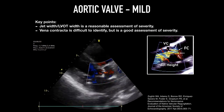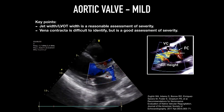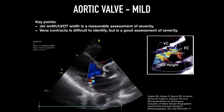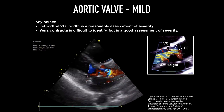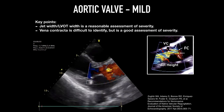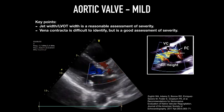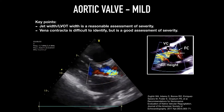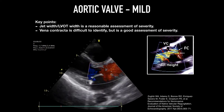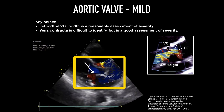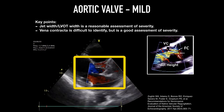A large vena contracta — more than 0.6 cm — means severe AR. An easier and also reasonable assessment is the jet width divided by the LVOT width: how much of the LVOT space the regurgitant jet occupies. A jet occupying less than 25% of the LVOT represents mild AR, while a jet representing more than 65% represents severe AR. In this clip, you see a thin, linear regurgitant jet in keeping with central mild AR.